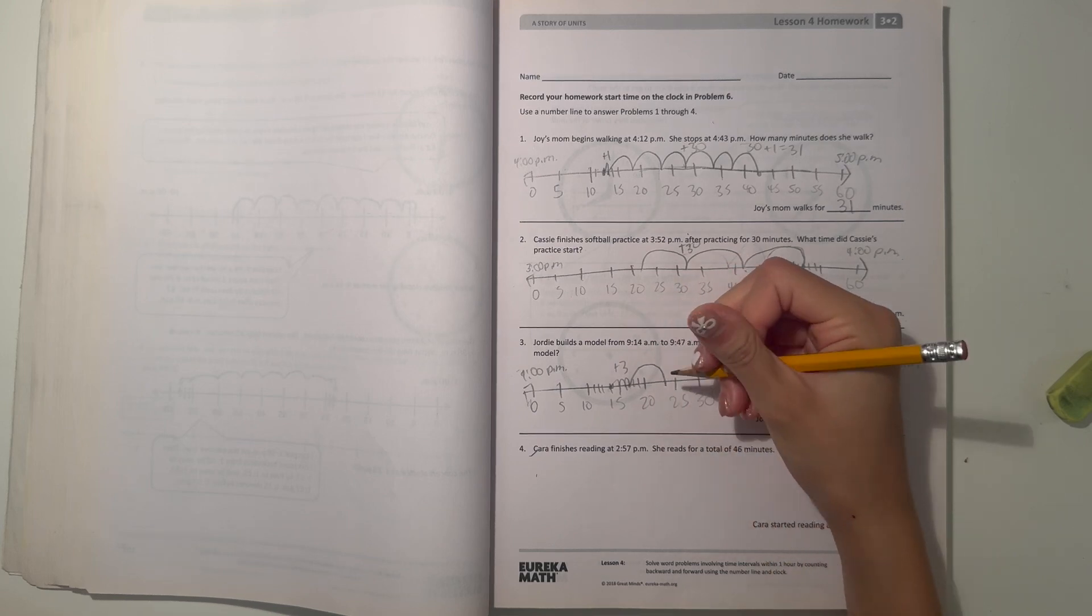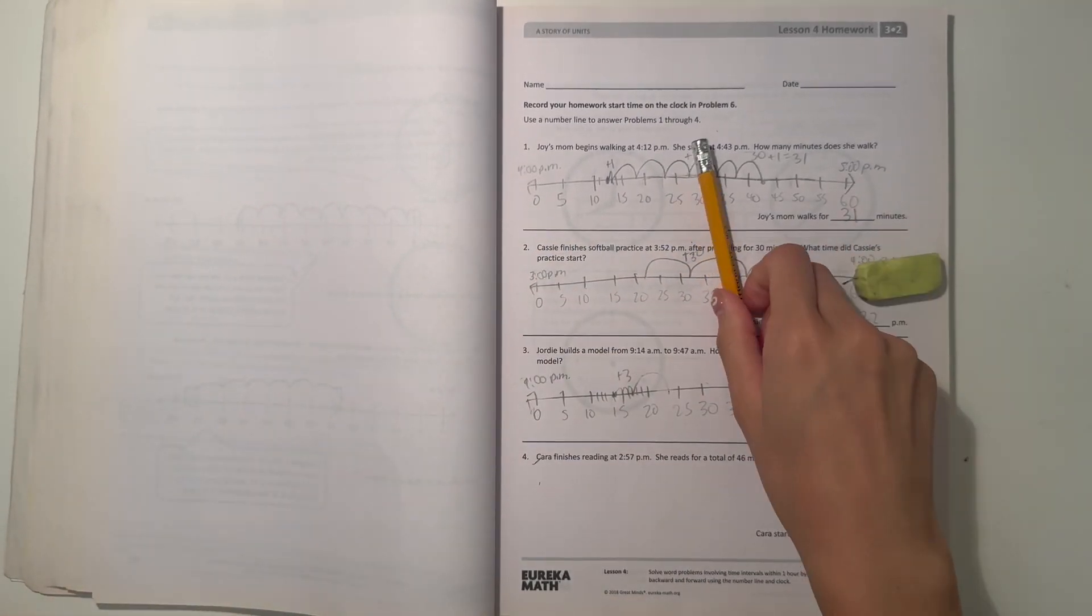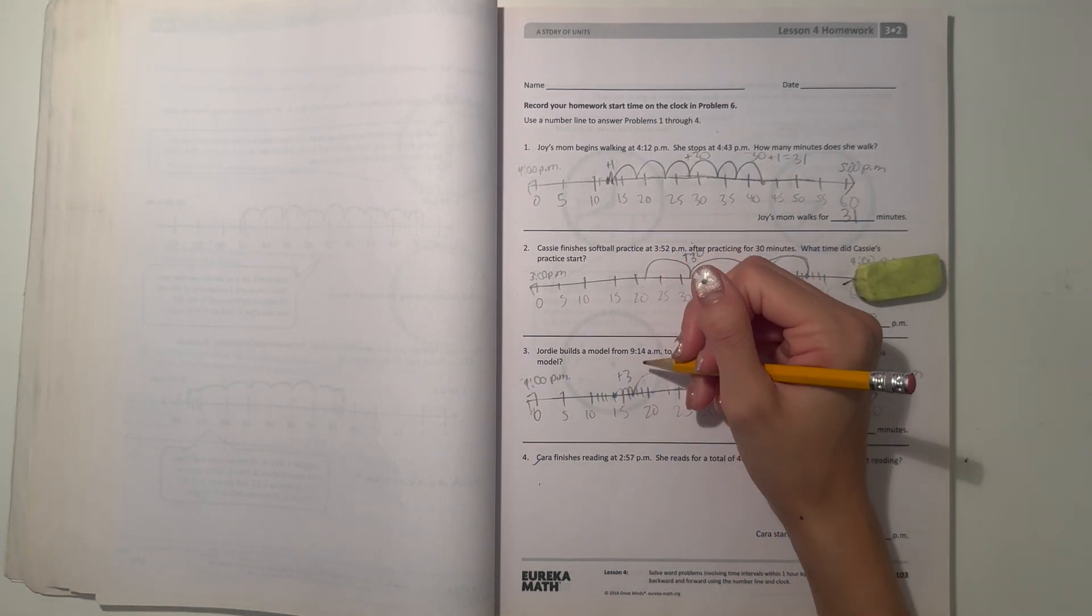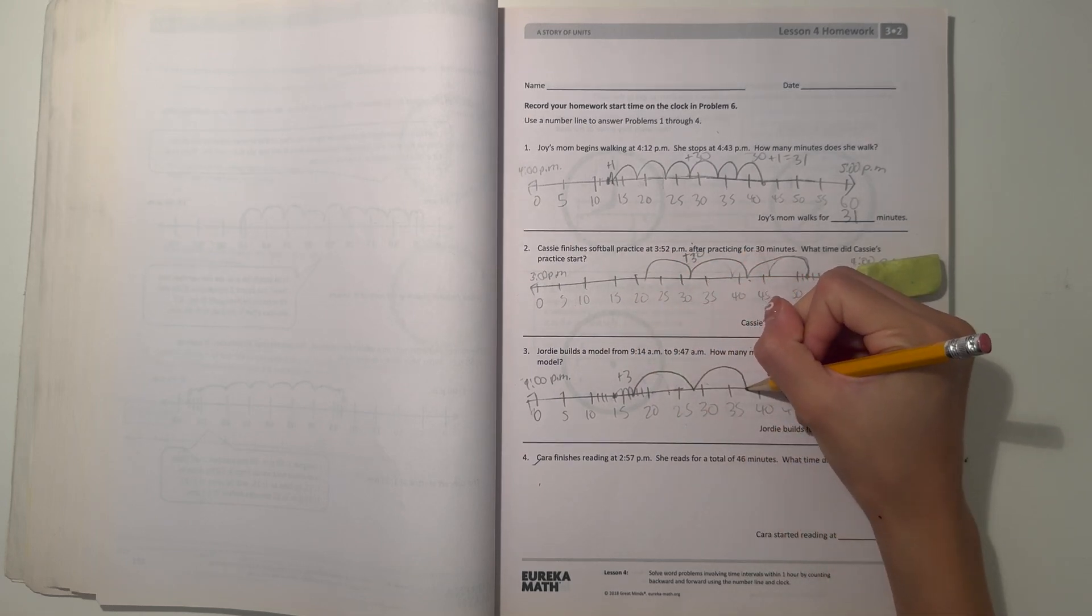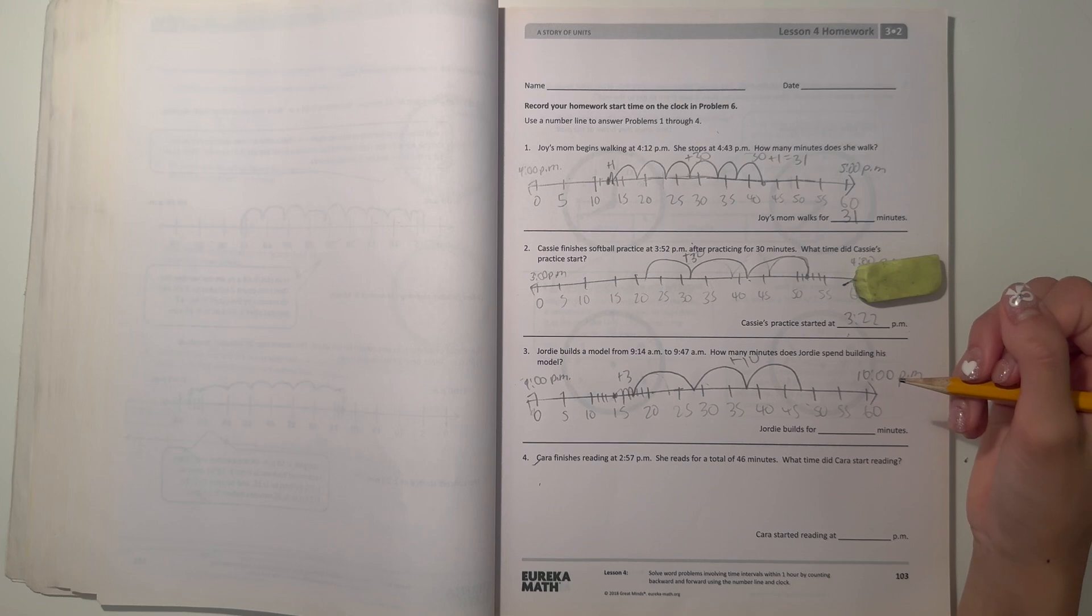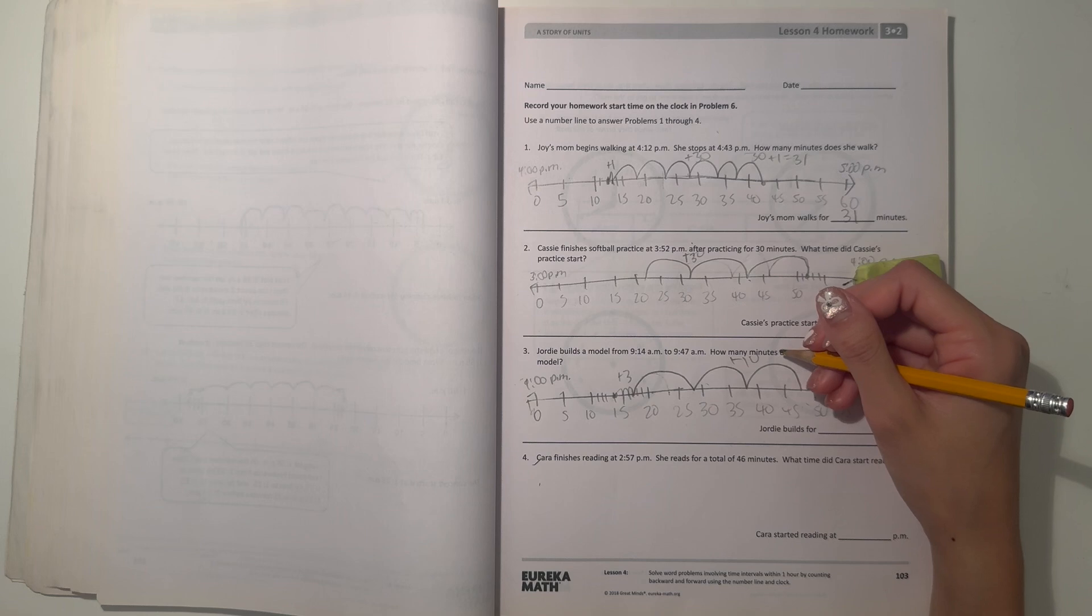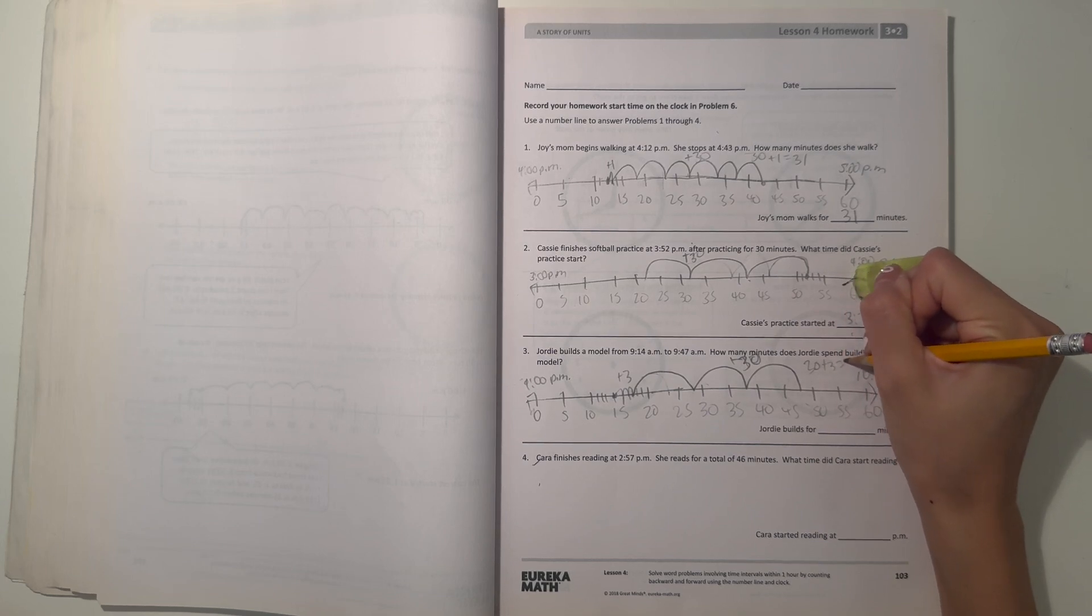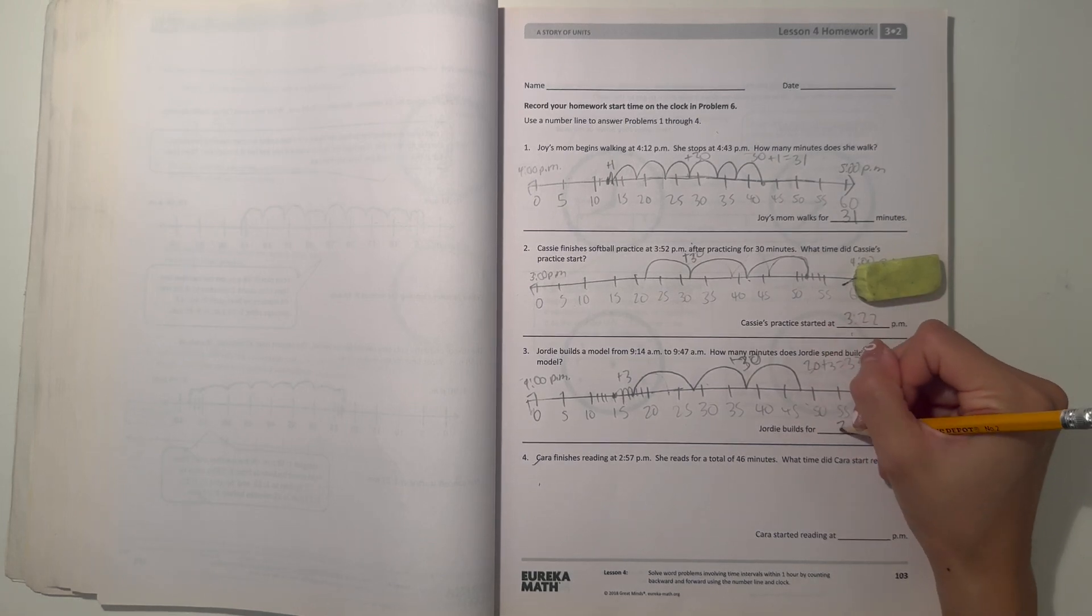Let's go to 9:47. We're at 9:17 right now, we're gonna jump to 9:27. Now we're at 9:47, so that's plus 30. Actually we jumped 30 minutes plus 3. 30 plus 3 equals 33, which means 14 plus 33 equals 47. So Jordy builds for 33 minutes.